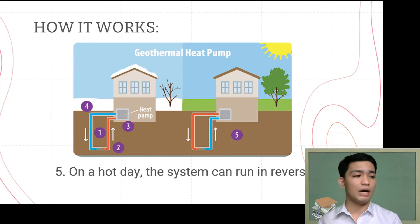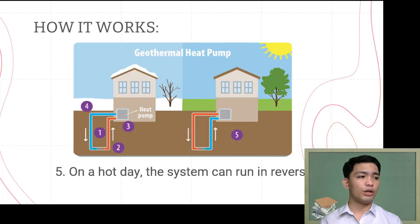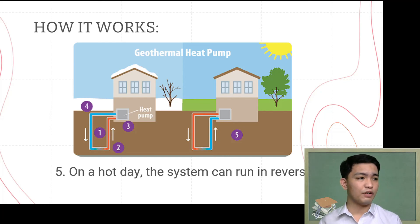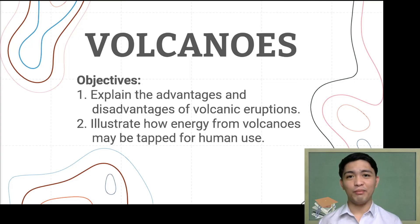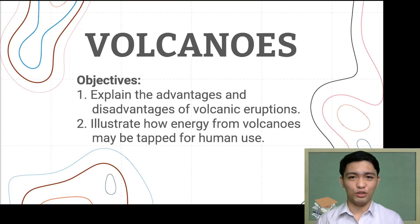That's how your geothermal heat pump works — it helps cool down the building. The key difference between a geothermal power plant and a geothermal heat pump is that the power plant converts heat into electricity, whereas the heat pump directly uses the heat from underground for heating or cooling buildings. So far, we were able to explain the advantages and disadvantages of volcanic eruptions and illustrate how the energy from volcanoes may be tapped for human use.